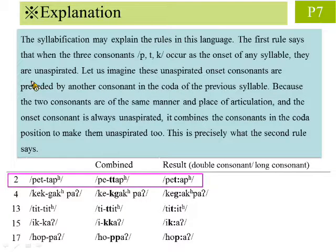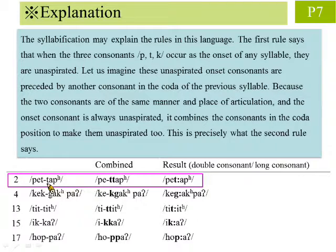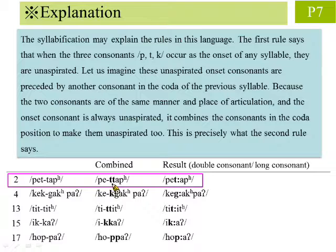We use the example circled in purple to explain. There are two syllables in this word. The coda of the first syllable and the onset of the second syllable are two T sounds of the same manner and place of articulation. So when pronounced together, they are combined. Because the sound T occurs at the onset of a syllable, it is unaspirated. Therefore, when it combines with the T immediately preceding it, the non-aspiration is passed over to make the first T unaspirated too. The end result is two unaspirated consonantal T sounds combined into a double consonant, also known as a long consonant. Lastly, we note that the repeated consonant can be represented by a colon symbol.